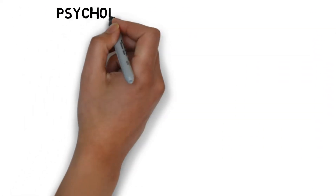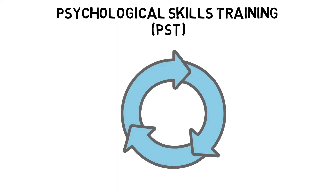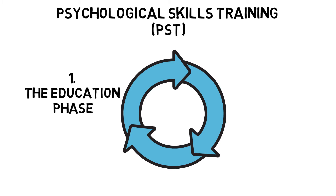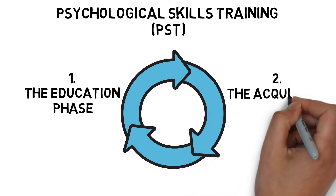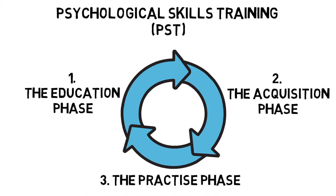Psychological skills training, or PST, are a range of skills used to improve performance and maximise athlete competency. There are three stages of PST. The education phase is the acknowledgement of issues and recognition that PST can help. The acquisition phase is the learning of strategies and techniques to address the problem. And the practice phase is the creation of new autonomous skills that are integrated into performance situations.